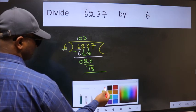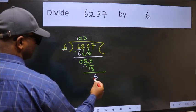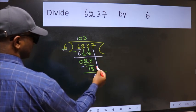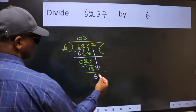Now we subtract. We get 5. After this, bring down the beside number. So 7 down.